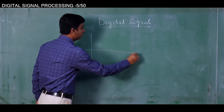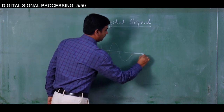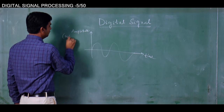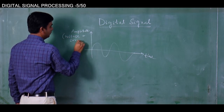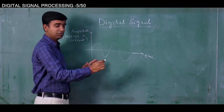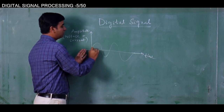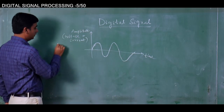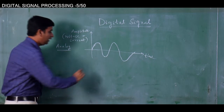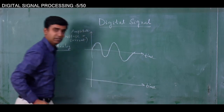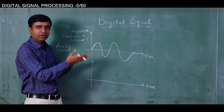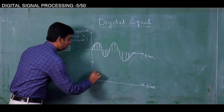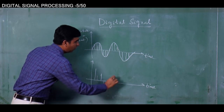If we draw it, this is the time axis, and this is the amplitude — maybe voltage or current. A continuous time signal has some value at each and every point of time — that is an analog signal. A digital signal is an analog signal sampled in time: if you take a few samples from the analog signal and plot them, it becomes a digital signal. We have already discussed this.